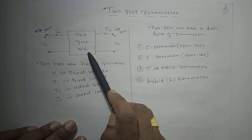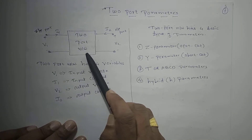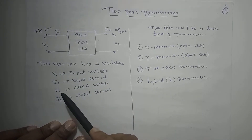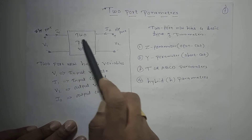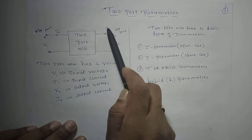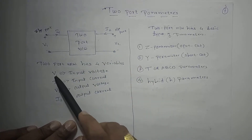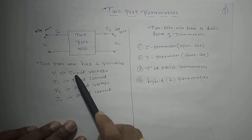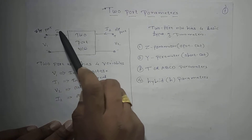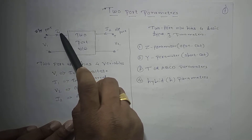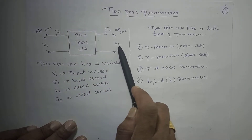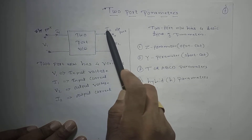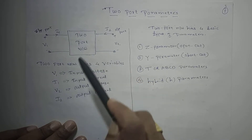A 2-port network has 4 variables: V1, I1, V2, and I2. V1 is called input voltage, I1 is called input current, V2 is called output voltage, and I2 is called output current.